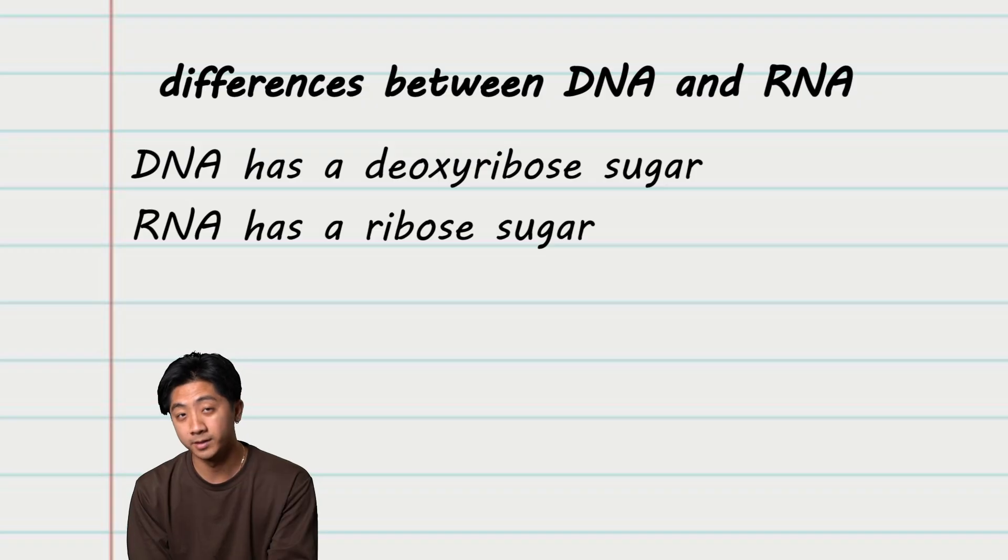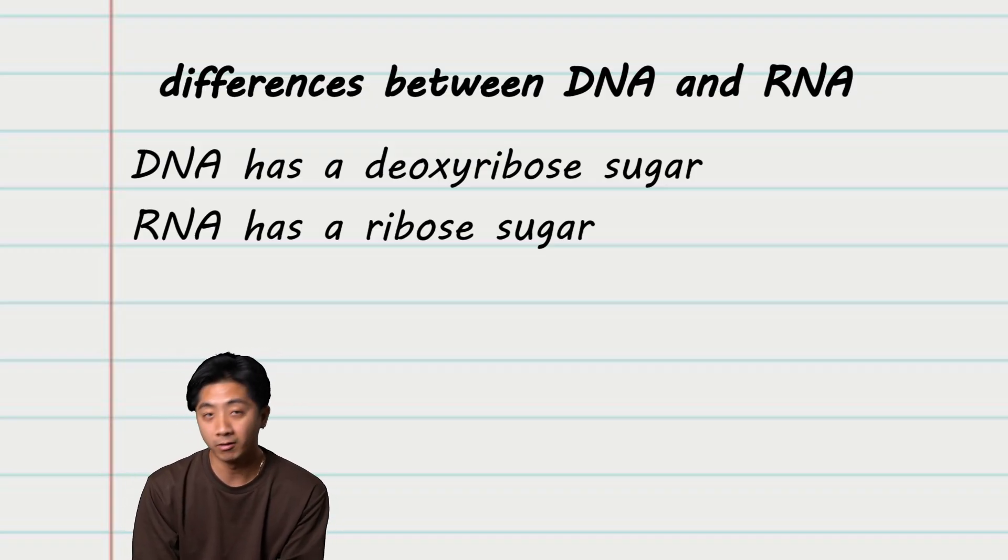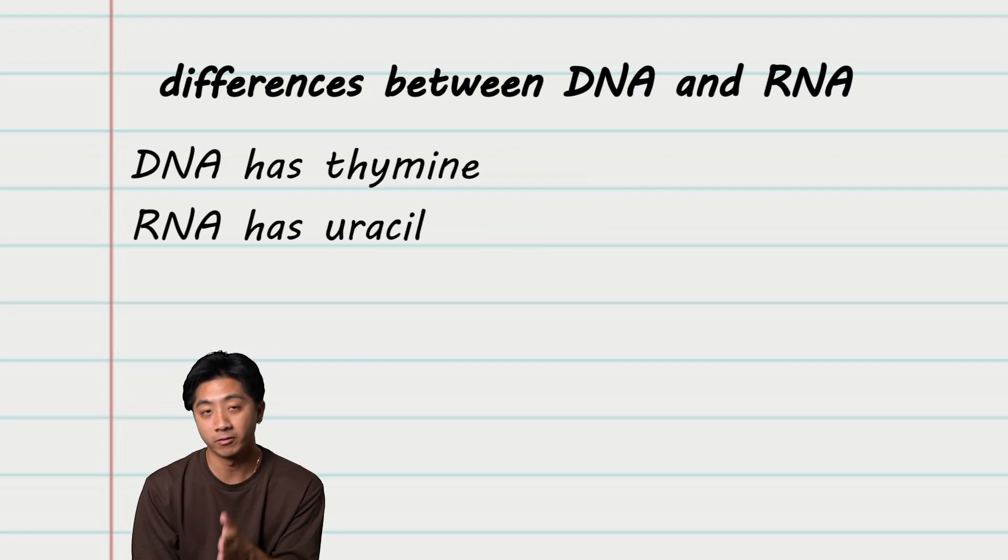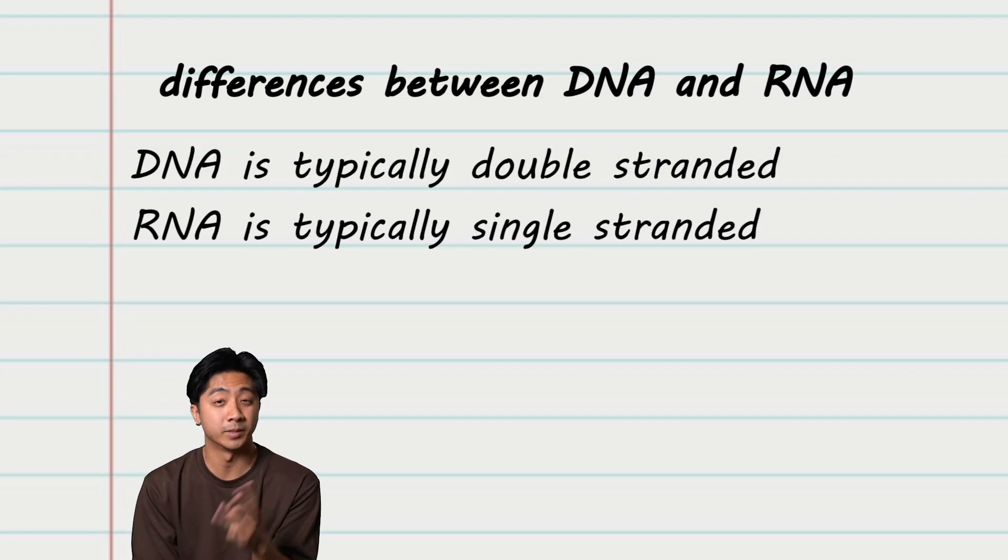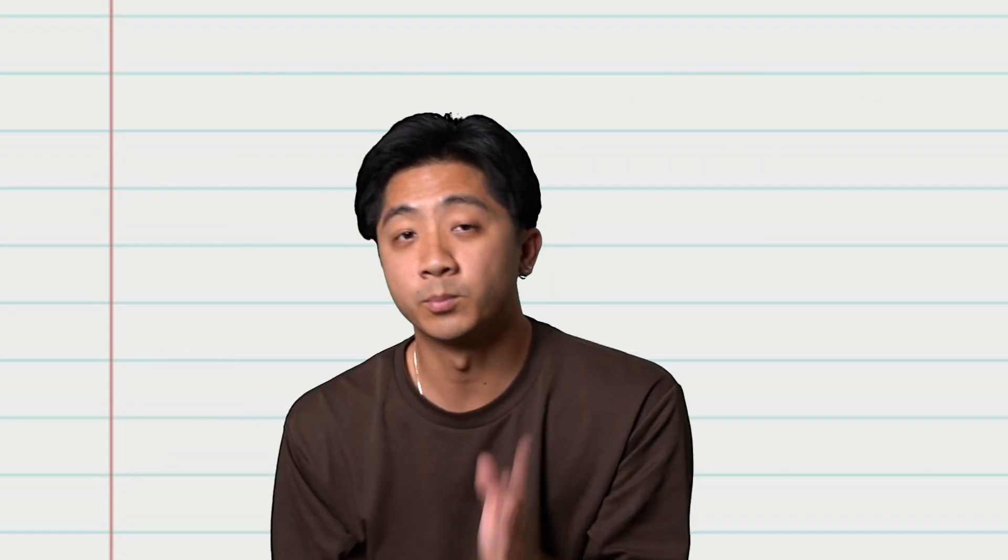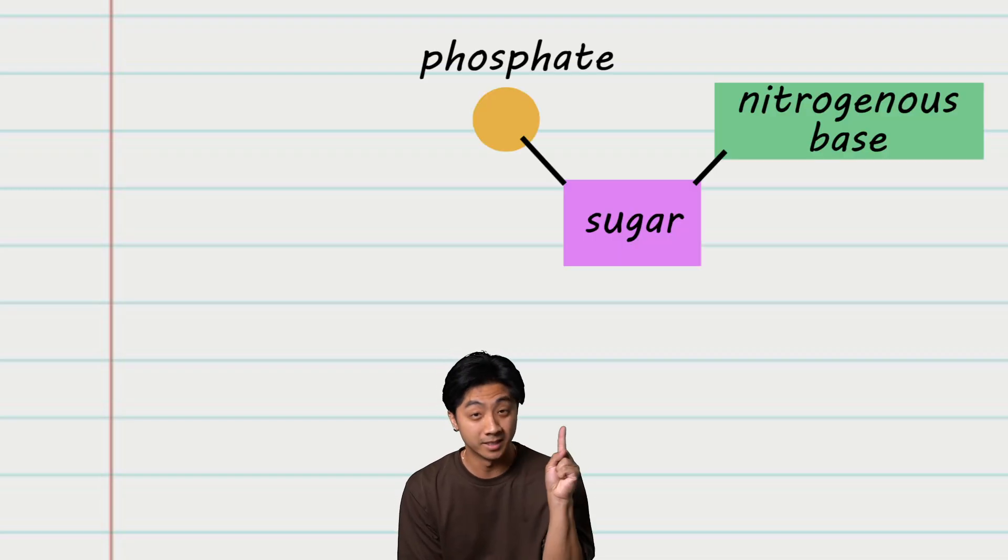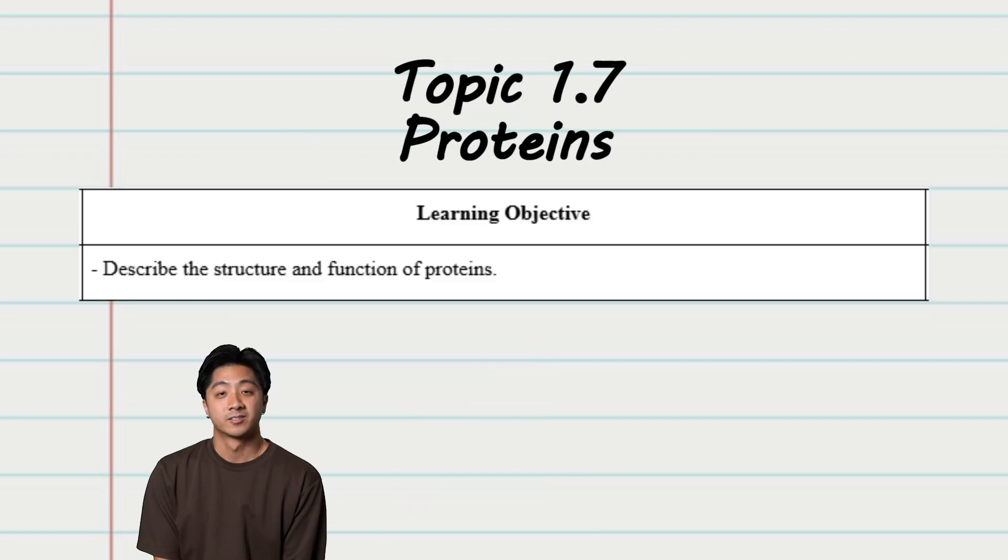There are a couple structural differences that you need to know between DNA and RNA. Number one, DNA has a deoxyribose sugar while RNA has only a ribose sugar. Number two, DNA contains thymine and RNA contains uracil. And number three, DNA is usually double-stranded while RNA is usually single-stranded. It's important to note that the AP Bio test does not require you to memorize the exact structure of every monomer. For example, for a nucleotide, you'll need to memorize this, but not this.